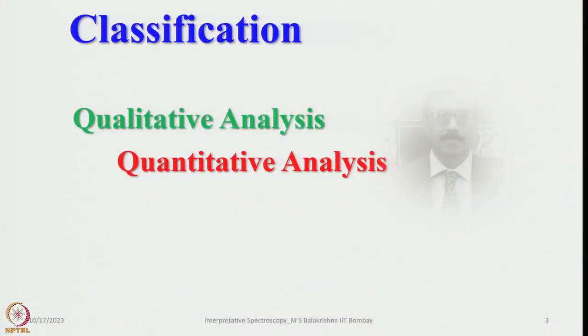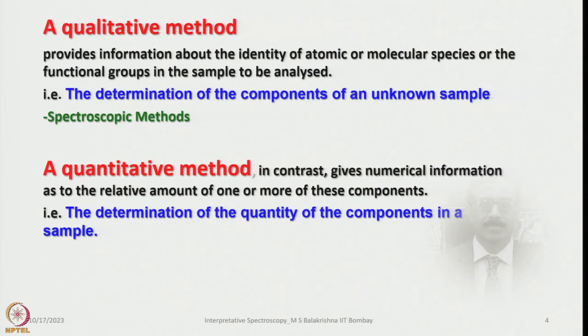How do we classify these analytical methods? We can classify broadly into two methods. One is qualitative analysis, the second one is quantitative analysis. Qualitative method provides information about the identity of atomic or molecular species or the functional groups present in the sample we are analyzing — that is, the determination of the components of an unknown sample. The best way to do it is to go for spectroscopic methods.